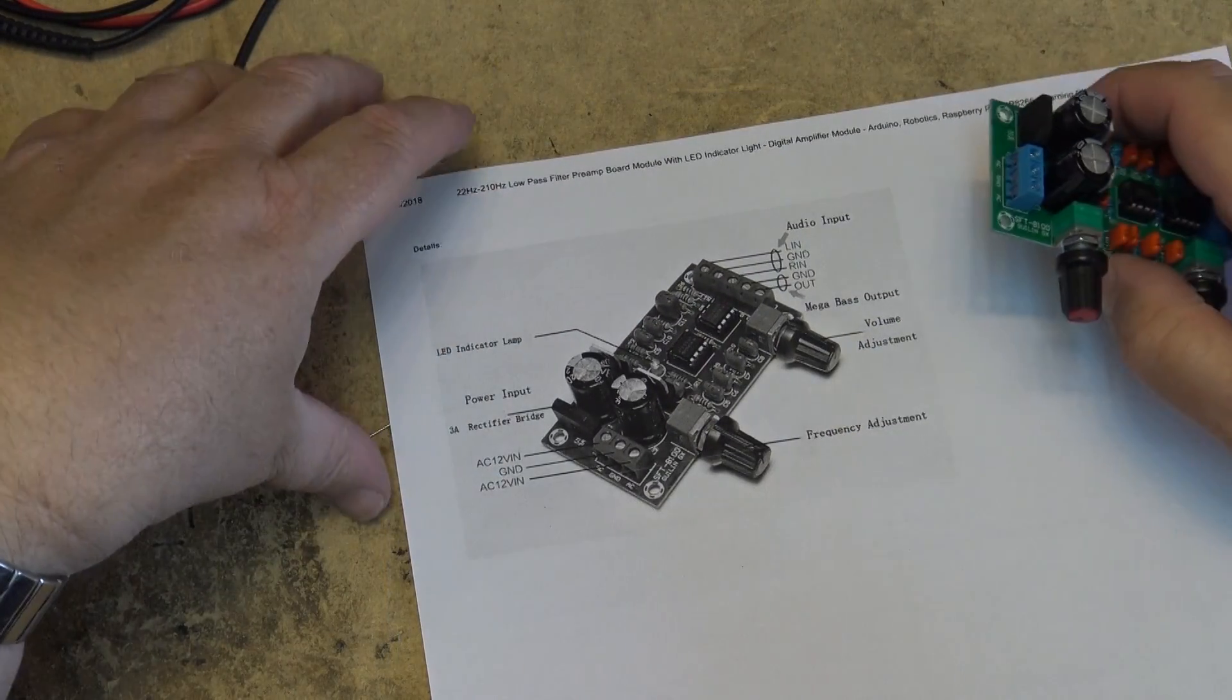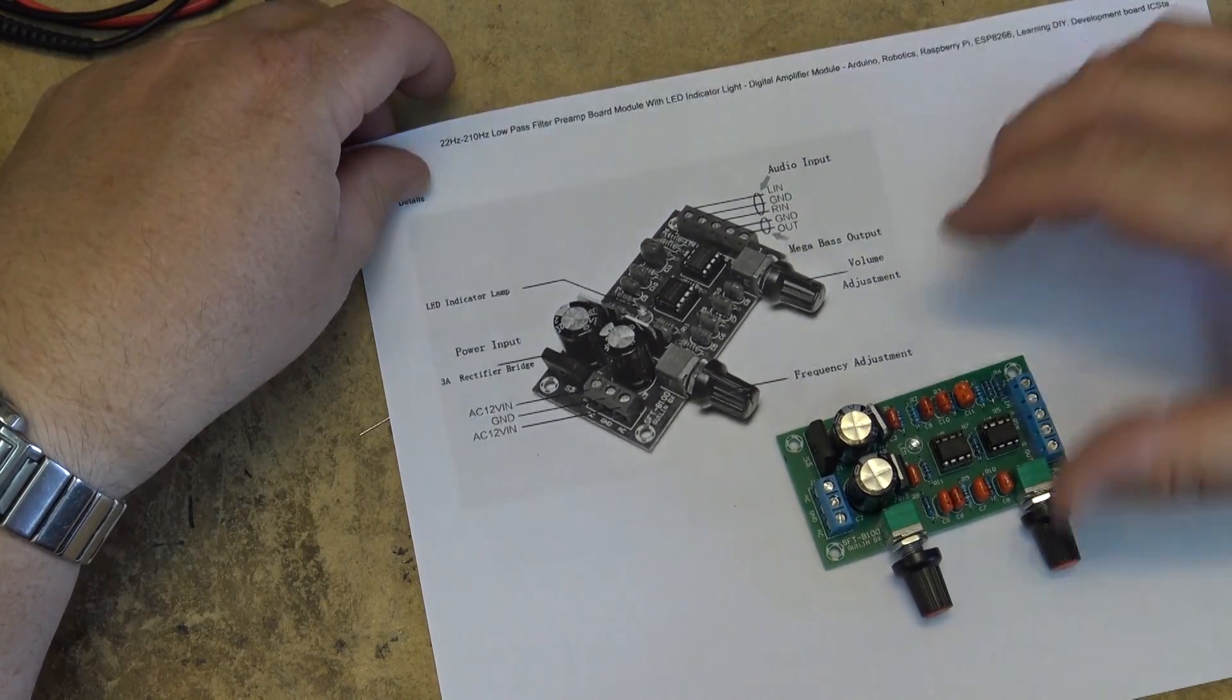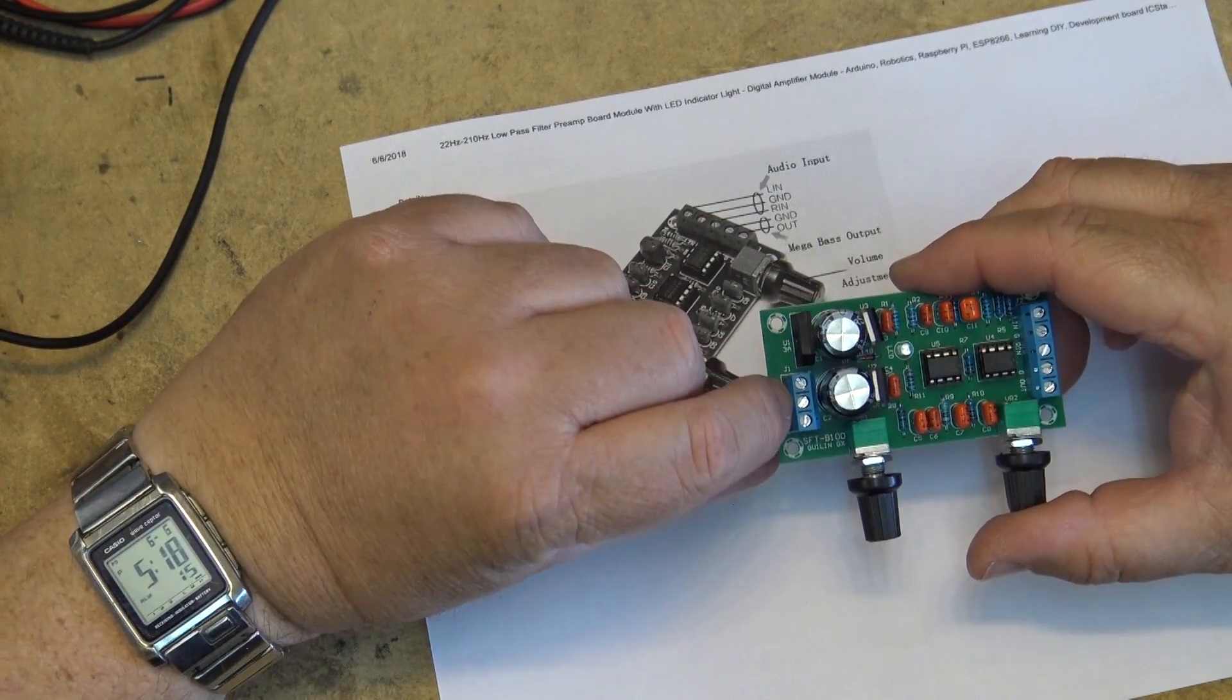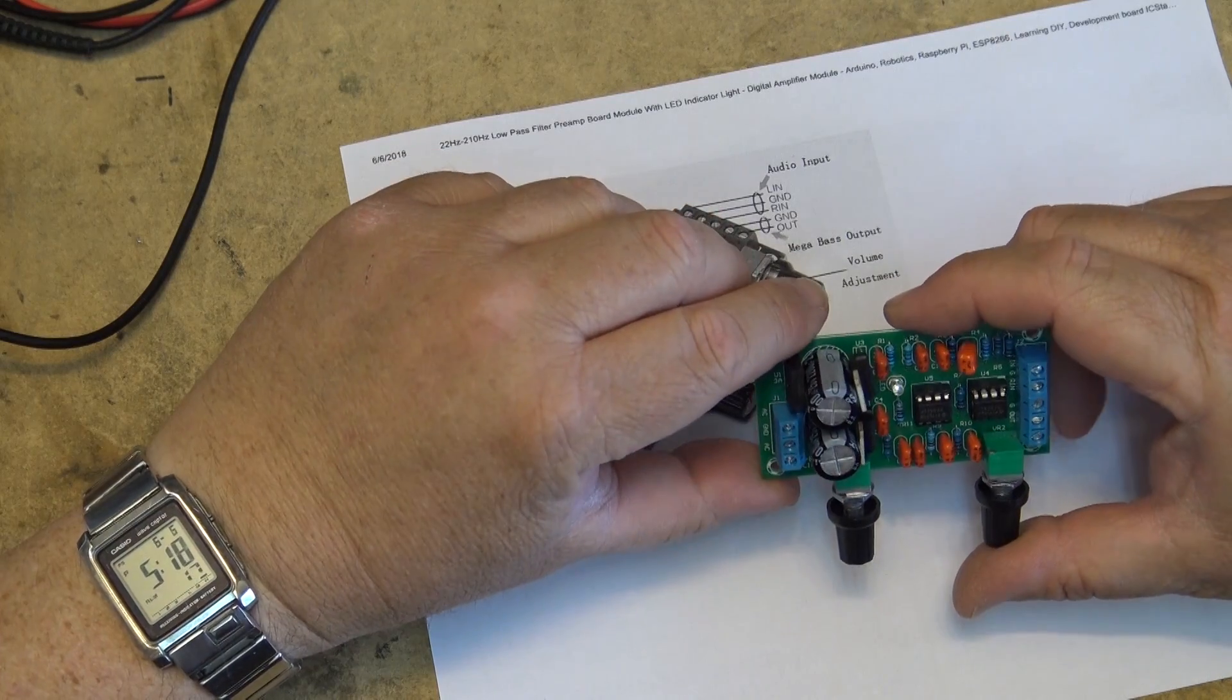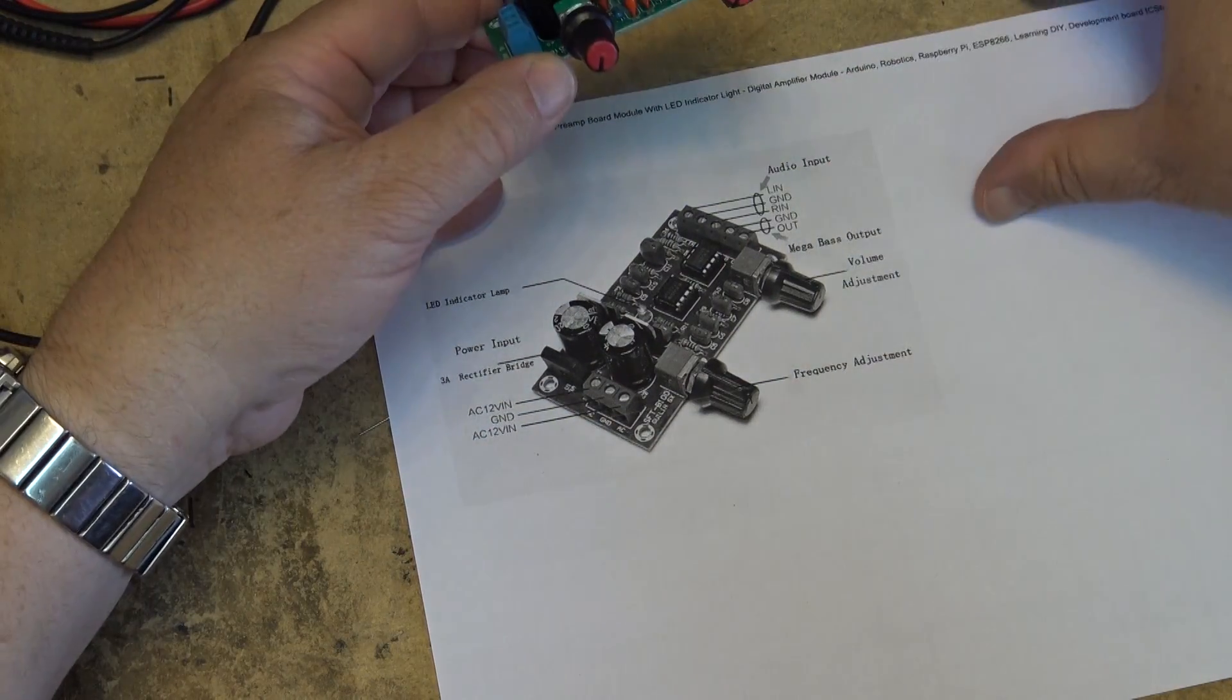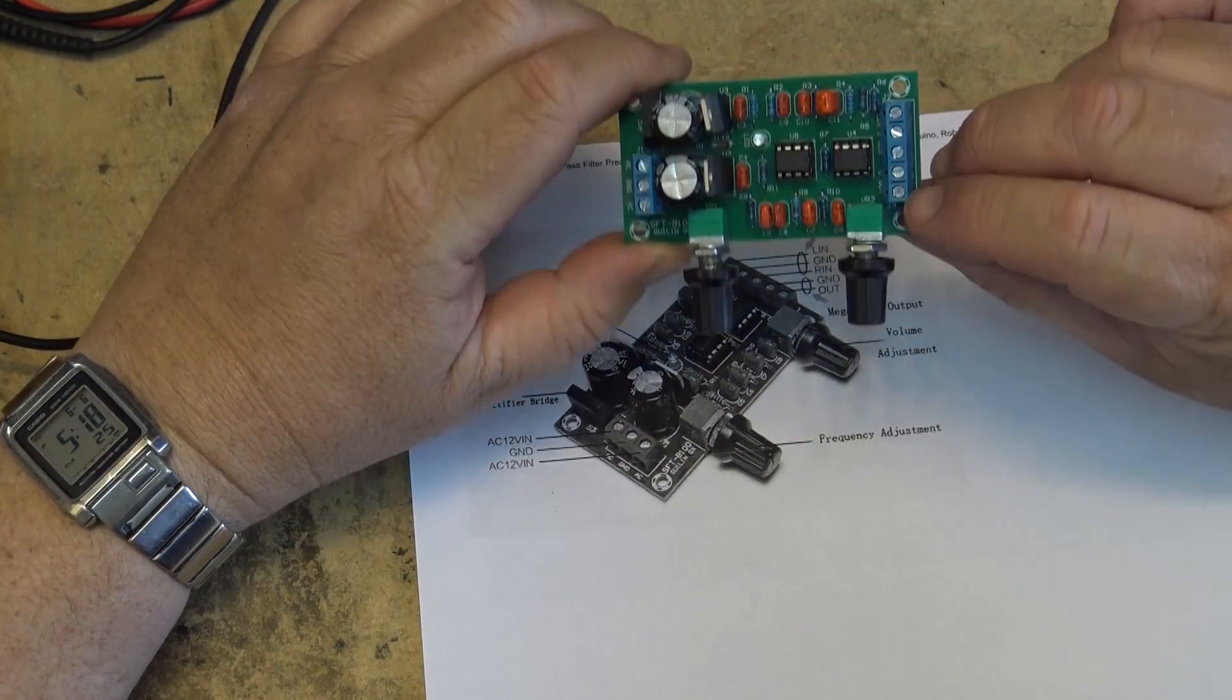Here are the controls. You've got your power input. It requires AC split input so you need to run this with a transformer - the center tap and ground, and then you give it your input. It's got left and right inputs because it takes a stereo input but gives you a mono output, and here is your output.